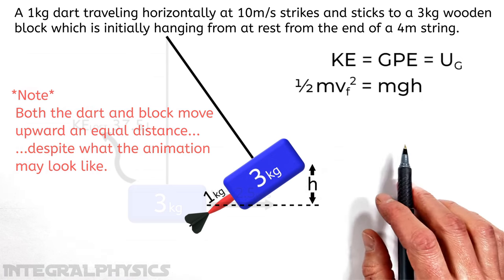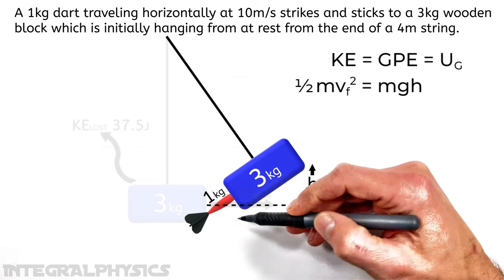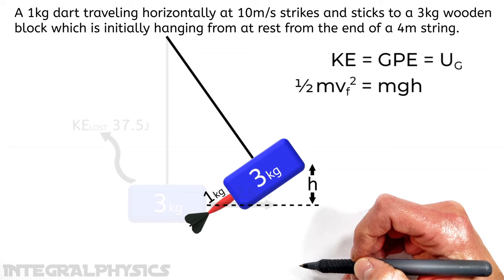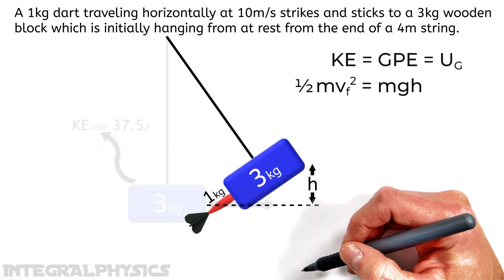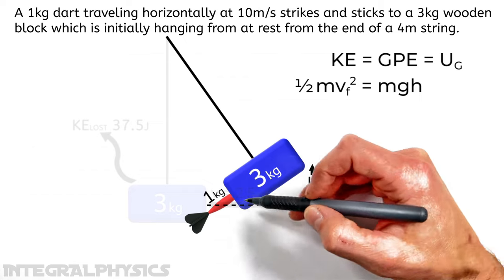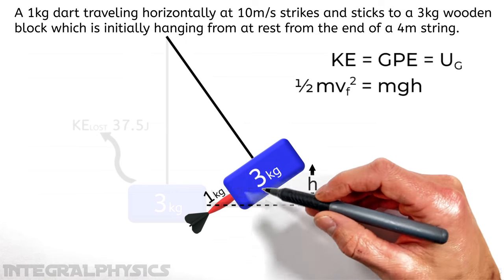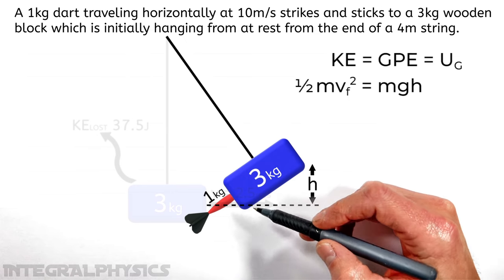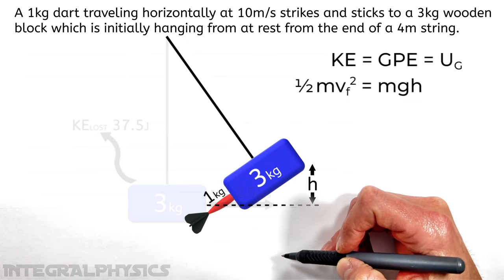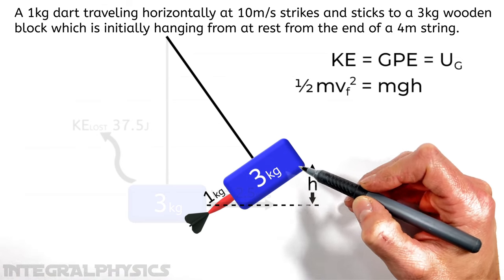Now one of the things we have to be careful with here is people think back to the last problem and say to themselves, well, if the dart and block lost 37 joules of kinetic energy, that must be what turned into potential. But it's not. Now realize that 37 joules that were lost, that was lost to heat and friction and deforming the dart or the block. That's energy that's gone from the system. It's whatever kinetic energy wasn't lost that's going to turn into potential here.